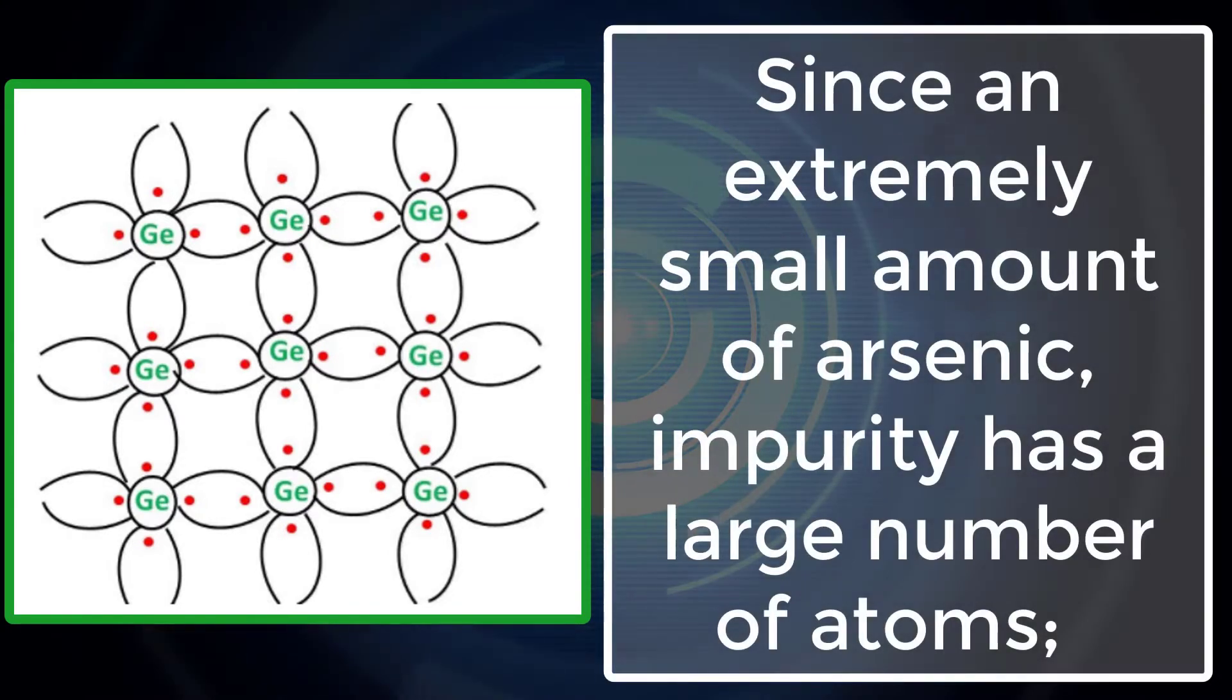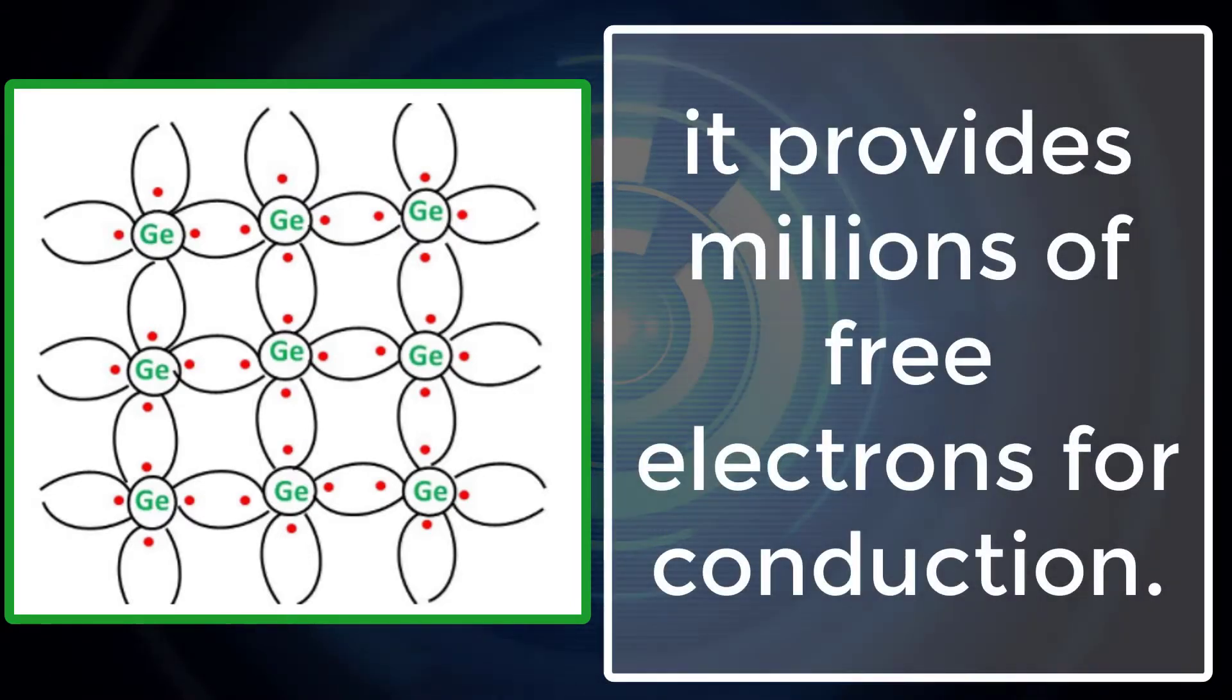Hence, an extremely small amount of arsenic impurity has a large number of atoms. It provides millions of free electrons for conduction.